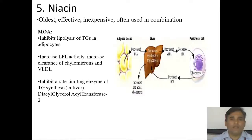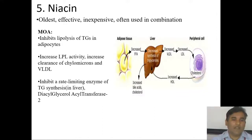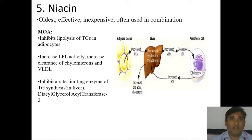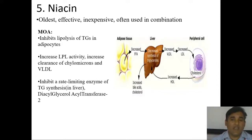Niacin (nicotinic acid) is a vitamin and very good drug for hypertriglyceridemia. It inhibits lipolysis of triglycerides especially in adipose tissue, increases lipoprotein lipase activity at the endothelium, increases clearance of chylomicrons, and inhibits the rate-limiting enzyme for triglyceride synthesis in the liver — diacylglycerol acyltransferase 2 (DGAT2). When cholesterol synthesis in the liver is inhibited, triglyceride concentration decreases, VLDL secretion decreases. Peripheral lipoprotein lipase activity increases, VLDL levels decrease, and ultimately plasma fatty acid levels and adipose tissue lipolysis are inhibited.